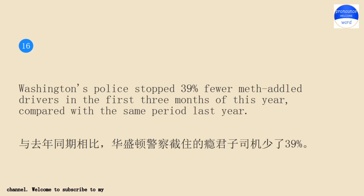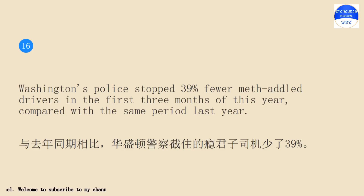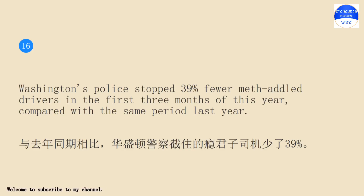Washington's police stopped 39% fewer meth addled drivers in the first three months of this year, compared with the same period last year.